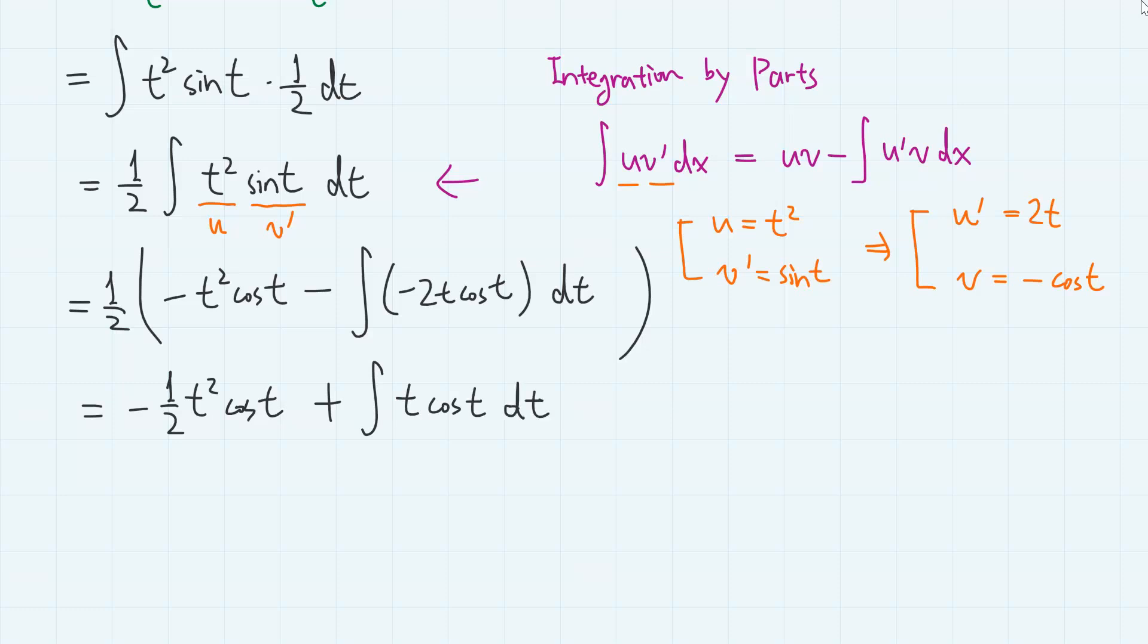Using integration by parts again, now with t as u and cosine t as v prime. Then we have u prime as 1, and v as sine t.